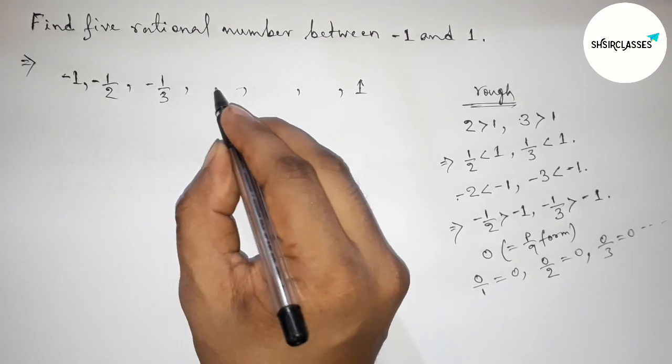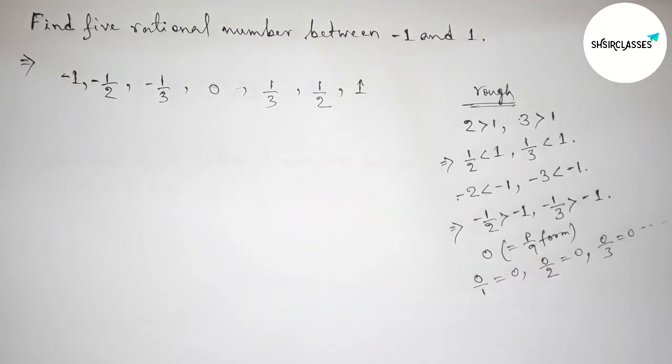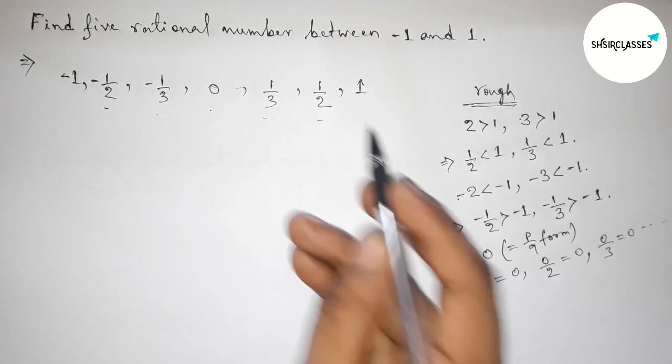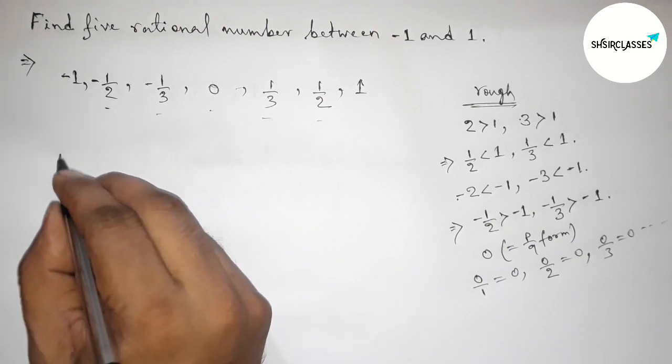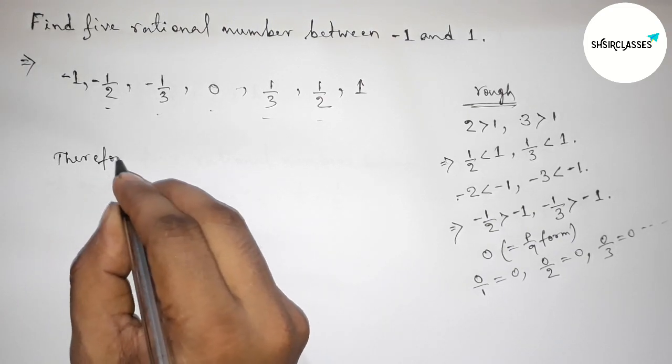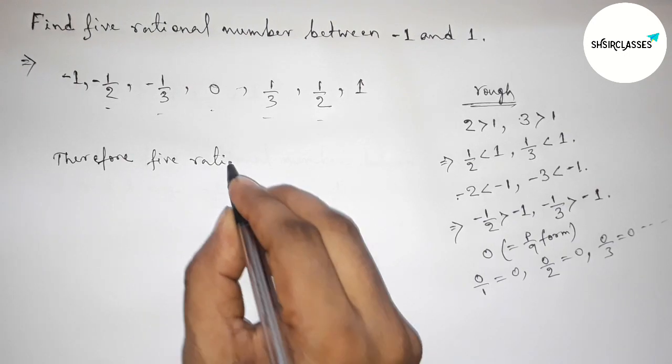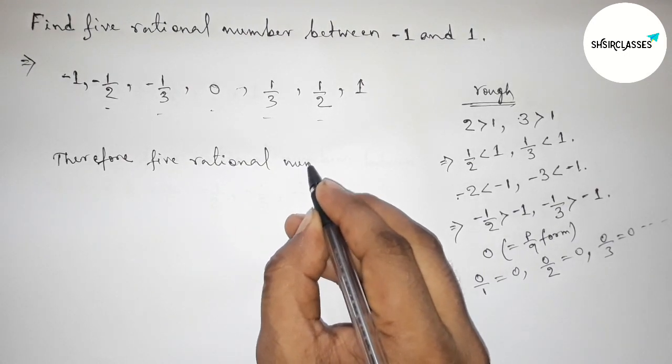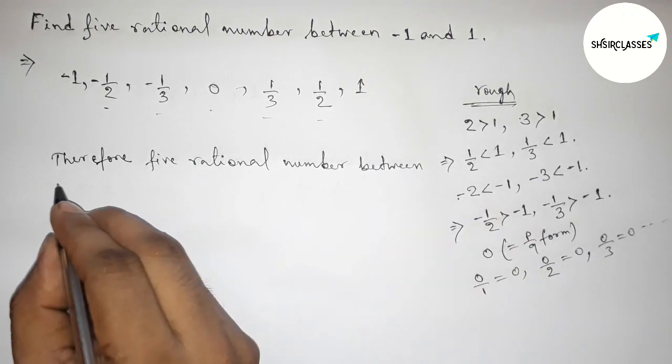So minus one by two, then minus one by three, here zero, here one by three, and one by two. So these are required five rational numbers. Okay, so therefore the required five rational numbers between minus one are... so the first one is here minus one by two.